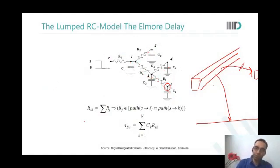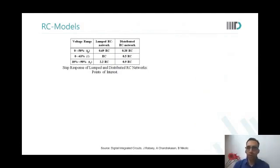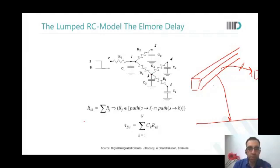I would strongly recommend you do some numericals — it's simple addition and multiplication. For the equation, the path S to I intersection path S to K refers to common paths from source S to output node I and from source S to output node K. S stands for source, and the intersection means the common path shared by both.